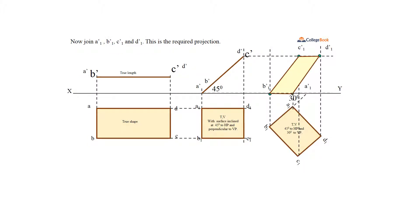Now join A1', B1', C1', and D1' to complete the front view of the rectangle with its surface inclined 45 degrees to the horizontal plane and with an edge inclined 30 degrees to the vertical plane.